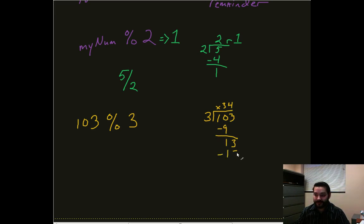1. So it becomes 34 remainder 1. 103 modulo 3 is now equal to 1.